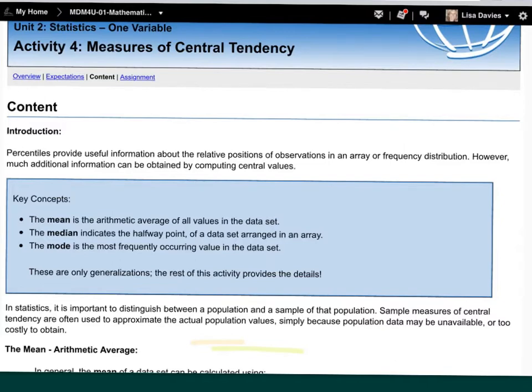So just to review, the mean is the arithmetic average of all the values. The median is the middle point, or the halfway point, just like the median going down the middle of a highway. And the mode, which sounds very much like the word most, is the one that occurs the most frequently in your values, in your data set.